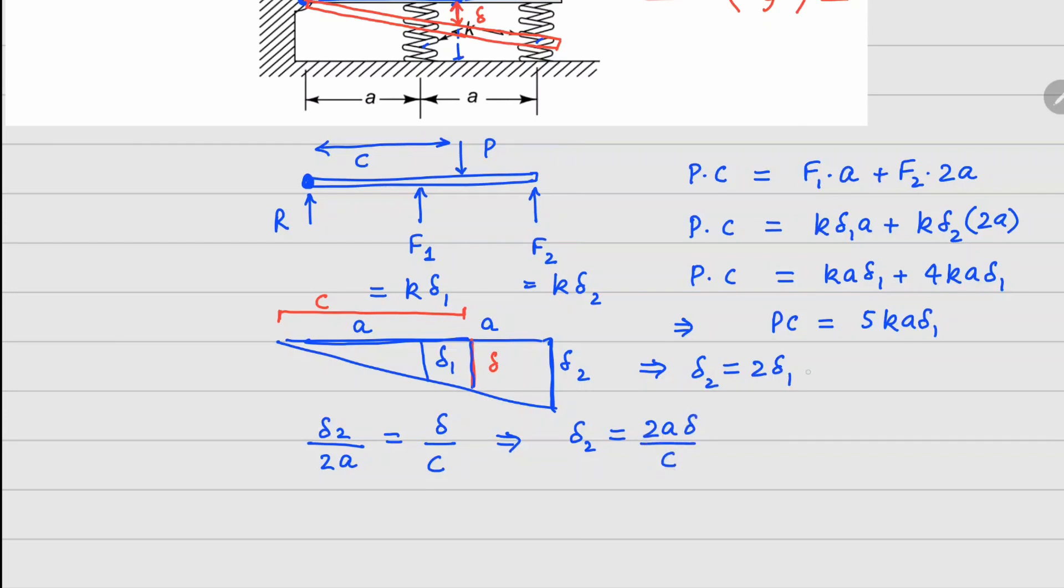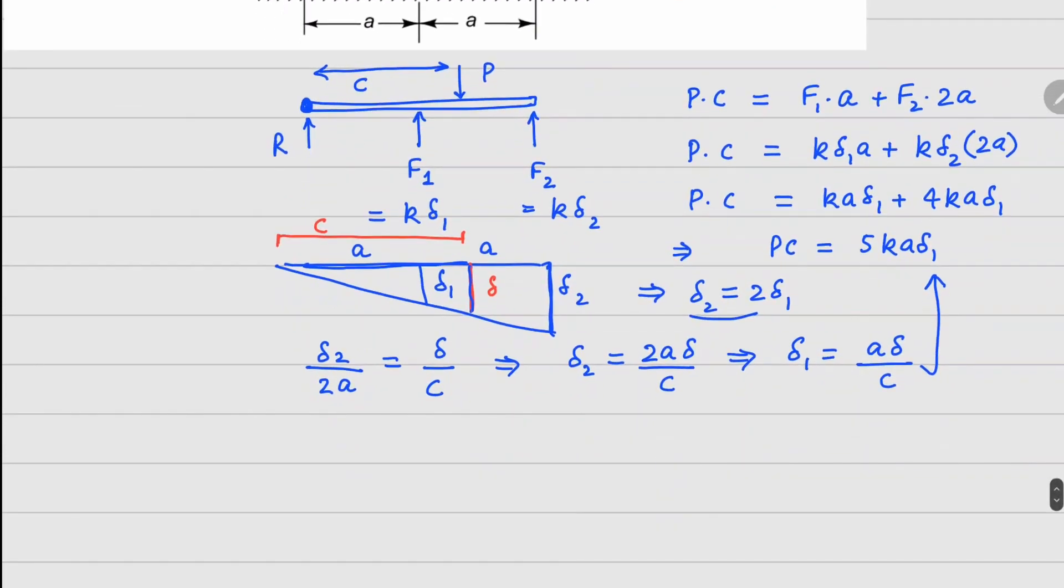Now since delta_2 equals 2 delta_1, we can write delta_1 is delta_2 divided by 2 from here. So this equals a delta divided by c. Now I can go and plug this value right there. So PC equals 5ka, and delta_1 is a delta divided by c.